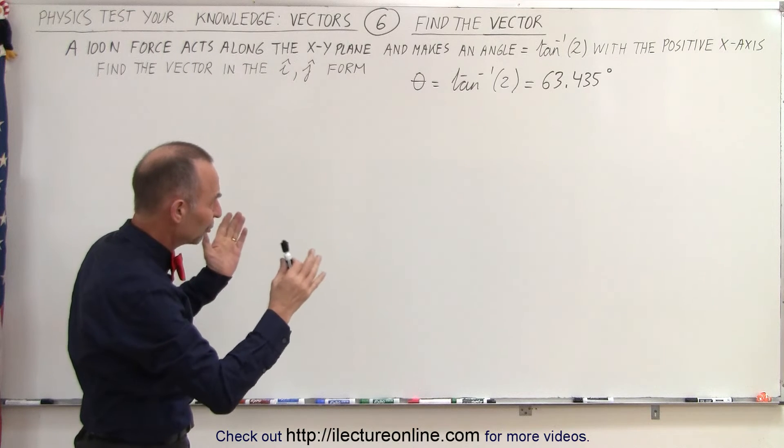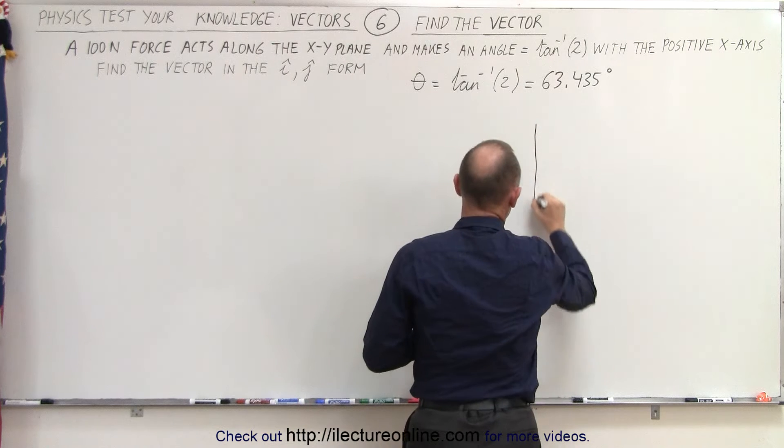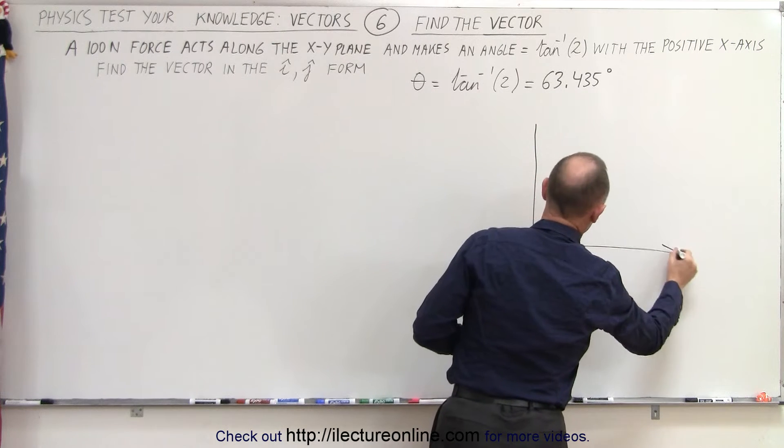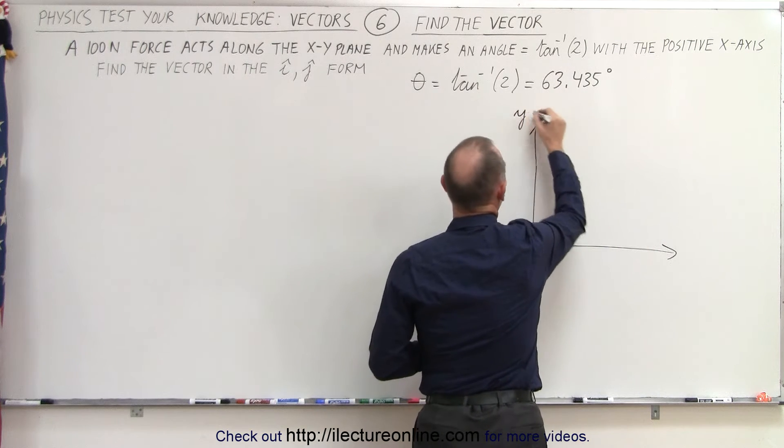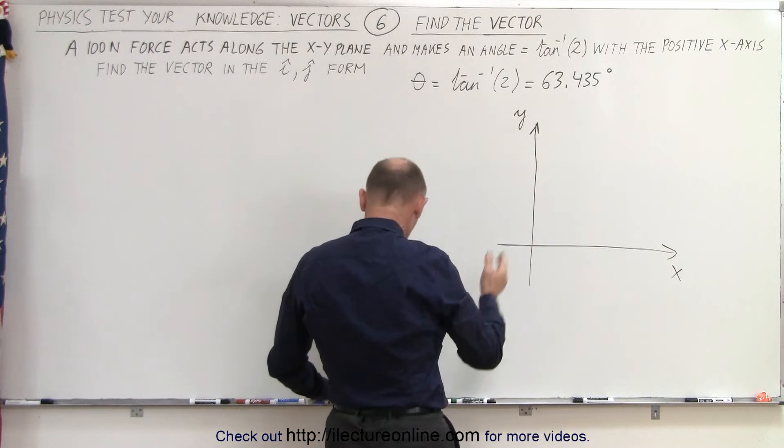Next, we want to make a visual drawing of what's going on, so let's draw an XY plane. The Y-axis, the X-axis, and draw a vector with an angle of 63 degrees.